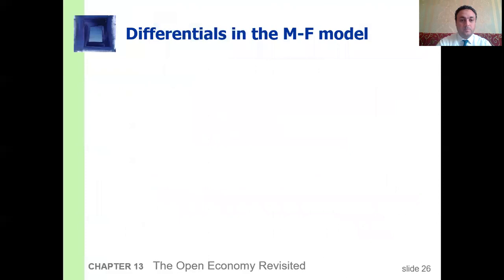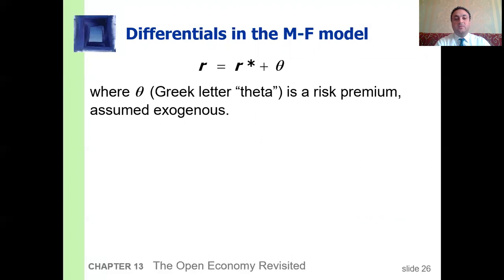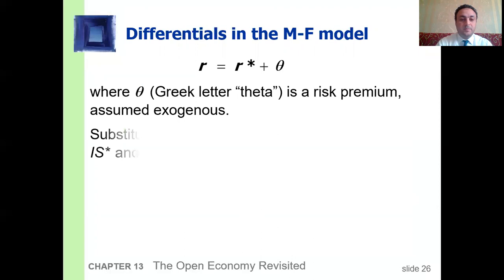In the Mundell-Fleming model with interest rate differentials, the interest rate equals the world interest rate plus the risk premium, denoted by the Greek letter theta. The risk premium is assumed exogenous. We substitute the expression for the interest rate into the IS curve and LM equations.